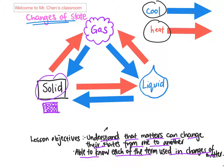So as you actually heat a solid up, it gains a lot more energy. When you heat it up, solid can actually melt. So when solid melts, it turns into liquid. That is called the melting process.